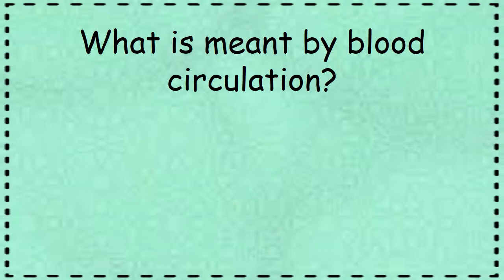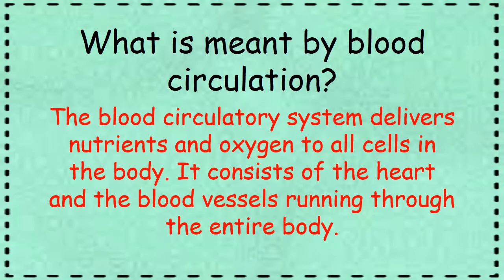What is meant by blood circulation? The blood circulatory system delivers nutrients and oxygen to all cells in the body. It consists of the heart and blood vessels running throughout the entire body.